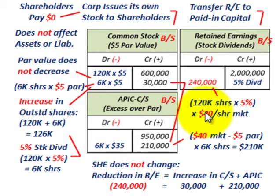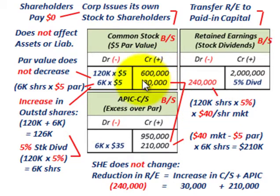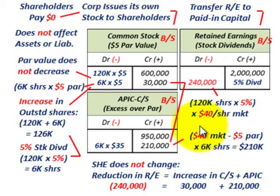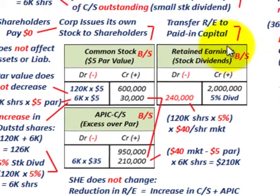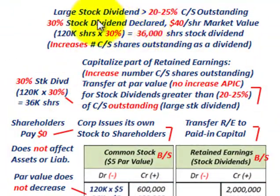Just remember with the small stock dividend: it's based on the market value per share at the time the dividend is declared. That amount goes into common stock at its par amount, with the additional balance going into additional paid-in capital based on the market price. Now let's look at the large stock dividend.